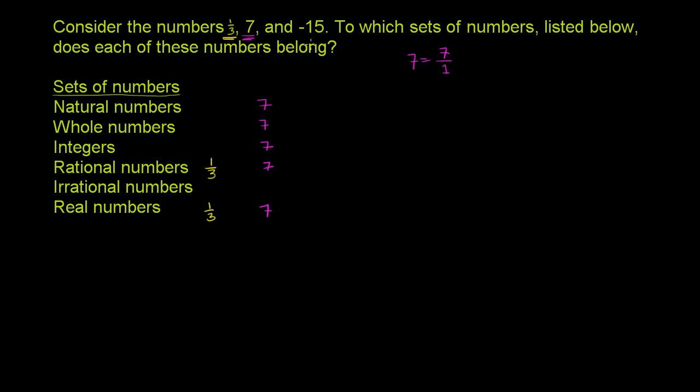So let's just finish up with negative 15 over here. Negative 15 is not a counting number. It's not a natural number. It's not 1, 2, 3, so on and so forth. It's not a whole number.